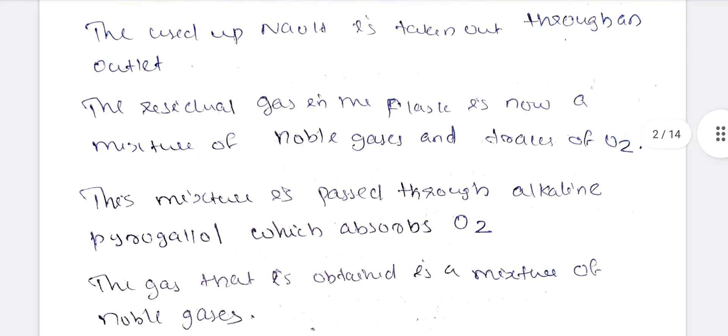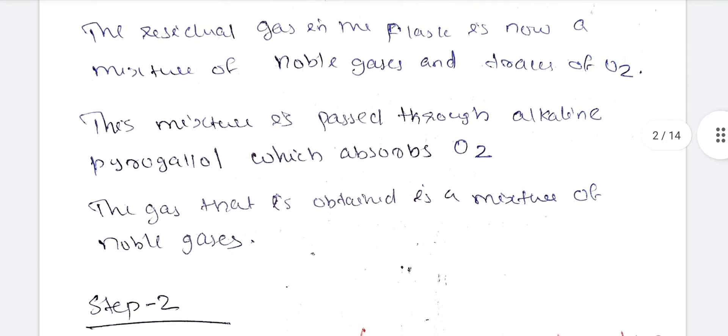The residual gas in the flask is now a mixture of noble gases and traces of oxygen. This mixture is passed through alkaline pyrogallol, which absorbs the traces of oxygen. After removal of oxygen, the gas obtained is a mixture of noble gases.